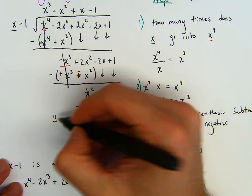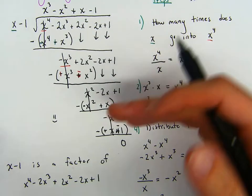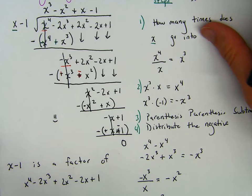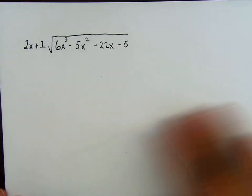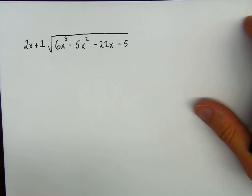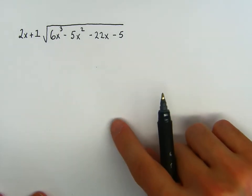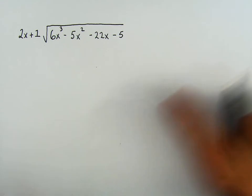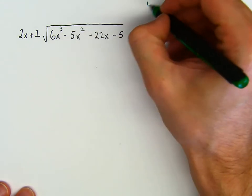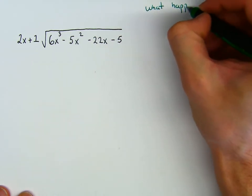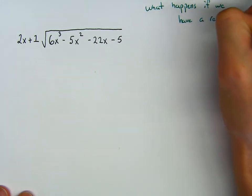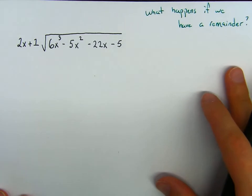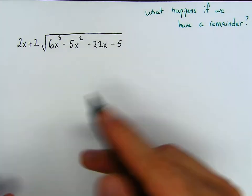This one was a lot, but hopefully with practice the rhythm is fun to do. Hopefully you have fun doing these problems. Let's take a look at something like this. Pause the video and try this one on your own. And don't freak out if you don't get a 0 at the end. The question will be: what happens if we have a remainder? So let's assume you try to do this question and let's see how we do it.